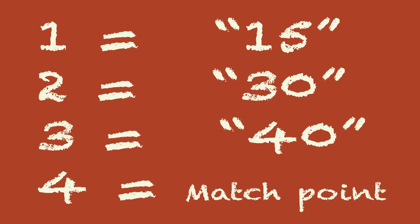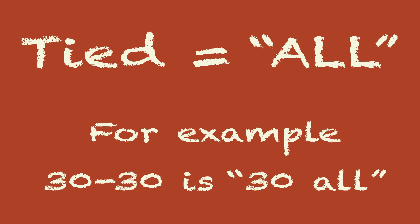After that, one point is 15, two is 30, three is 40, and four is match point. When the score is tied, we say "all." If the score is tied 40 to 40, it's game point for both sides, so we call it deuce.